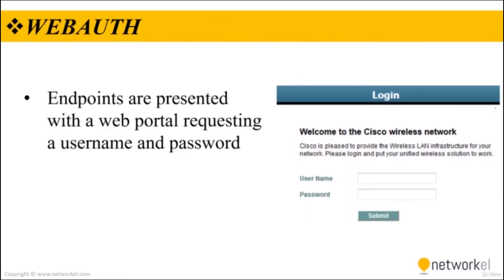For web authentication (WebAuth): in an organization, endpoints that try to connect to the network might not have 802.1x supplicants and might not have a known MAC address to perform MAB. These endpoints can be employees and contractors with misconfigured 802.1x settings, or visitors and guests that need internet access. For these cases, WebAuth can be used — endpoints are presented with a web portal requesting a username and password.